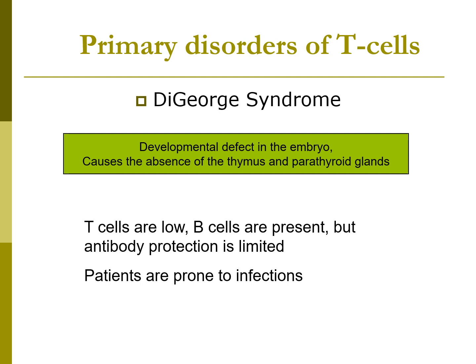One primary T-cell disorder is DiGeorge syndrome, also known as congenital thymic hypoplasia. It is a developmental defect in the embryo causing absence of the mature thymus and parathyroid glands, malformation of the heart and blood vessels, and neuromuscular issues. T-cells are low, B-cells are present but antibody production is limited, and patients are more prone to infections. There is a cure — a fetal thymus transplant — which can restore T-cell activity, though other deformities remain independent problems.